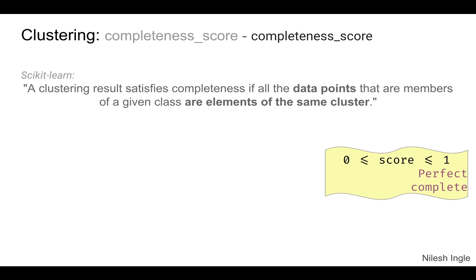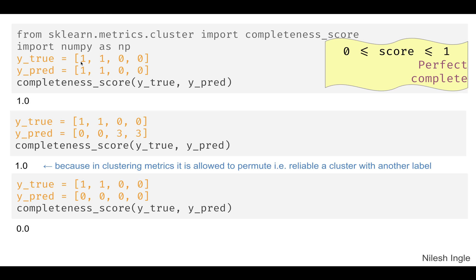The completeness score measures whether all data points that are members of a given class are elements of the same cluster. For example, with two classes — zero and one — if all elements from class one belong to cluster one and class zero to cluster zero, the completeness score is one (perfect). Permutations are fine as long as there's no mix-up between cluster data points. However, if a cluster labeled zero contains data points from both class one and class zero, the completeness score drops to zero.